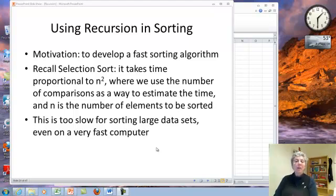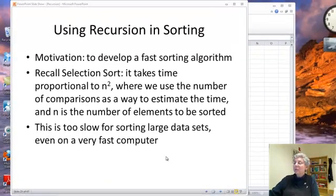In this section, we're going to talk about using recursion to develop a fast sorting algorithm. If you'll recall the selection sort method we used, it takes time proportional to n squared, where we're using the number of comparisons of elements that an algorithm does as a proxy for the time it takes. So n squared grows quickly, and that means it's too slow for sorting large data sets. We need to develop something more clever.